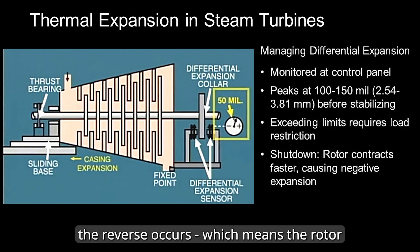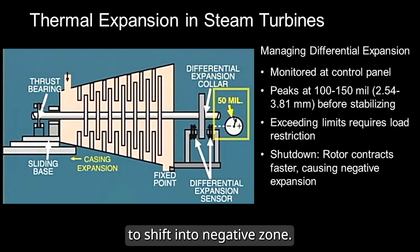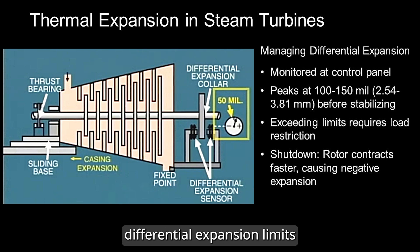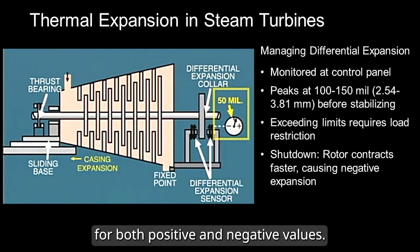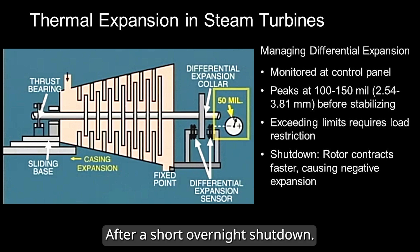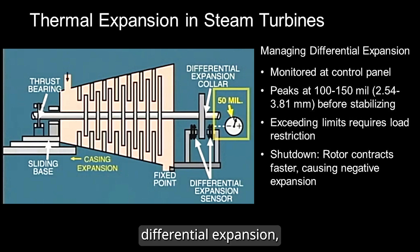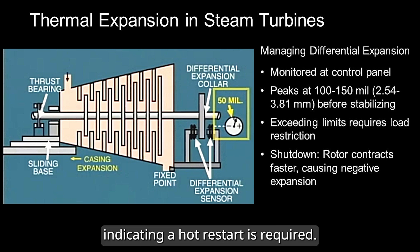During shutdown, the reverse occurs — the rotor contracts faster than the casing. This causes differential expansion to shift into a negative zone. Manufacturers specify safe differential expansion limits for both positive and negative values. The governor pedestal's expansion position is also monitored. After a short overnight shutdown, the rotor contracts faster than the casing, leading to negative differential expansion, indicating a hot restart is required.